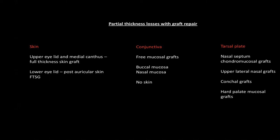Different sources for mucosal grafts include buccal mucosa and nasal mucosa, but we must remember we cannot use skin as a lining for the conjunctiva because of the epithelial and keratin elements present in skin. If the tarsal plate is lost, cartilage grafts can reconstruct the structural support. These can be simple cartilage or composite cartilage with skin or perichondrium — sources include nasal septum, chondromucosal grafts, upper lateral nasal, conchal grafts, and hard palate mucosal grafts.